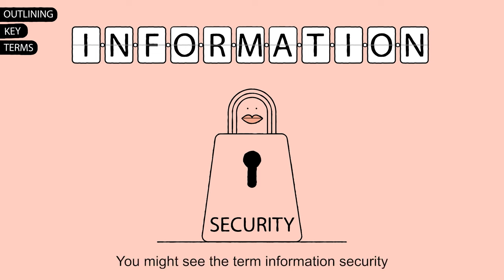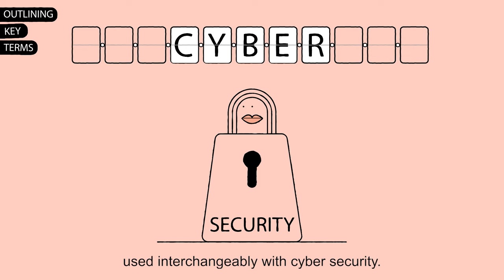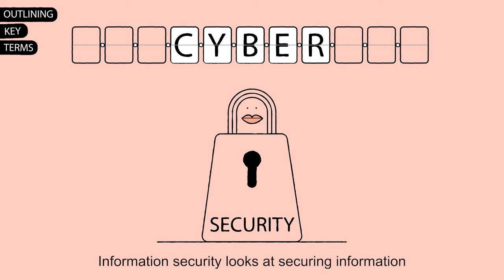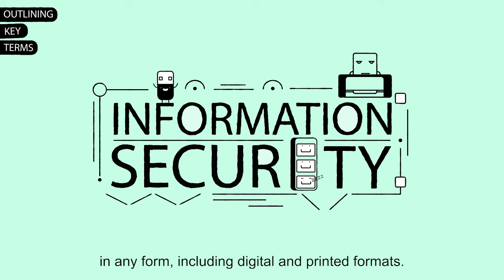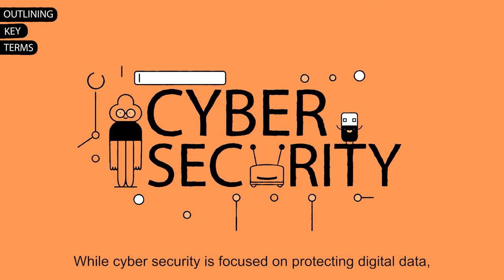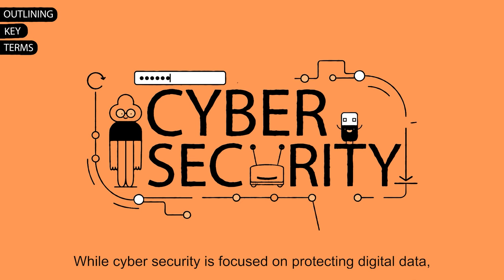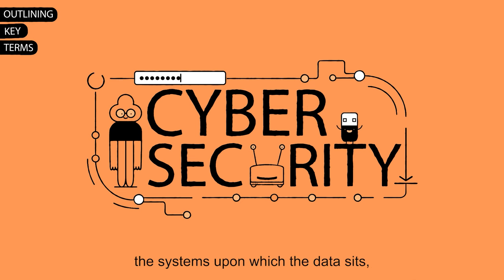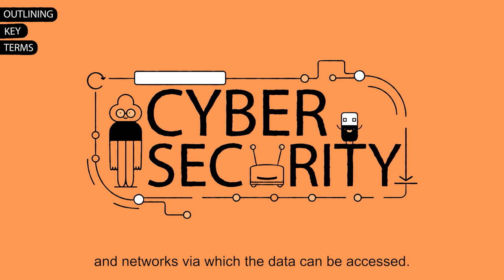You might see the term information security used interchangeably with cybersecurity. Information security looks at securing information in any form, including digital and printed formats, while cybersecurity is focused on protecting digital data, the systems upon which the data sits and networks via which the data can be accessed.